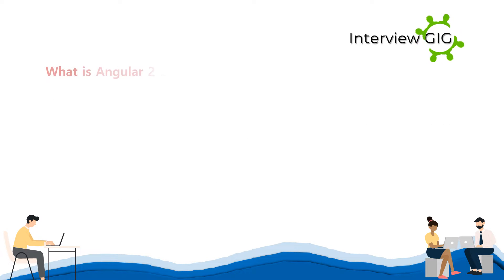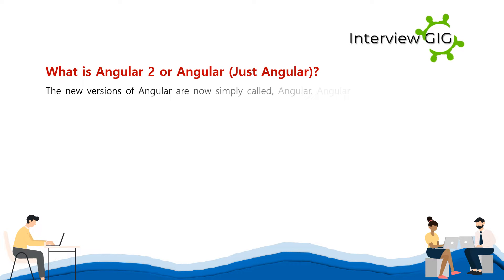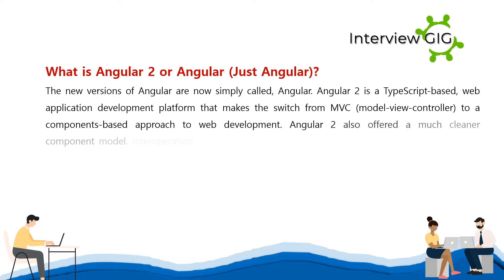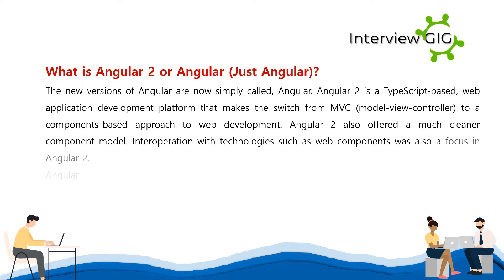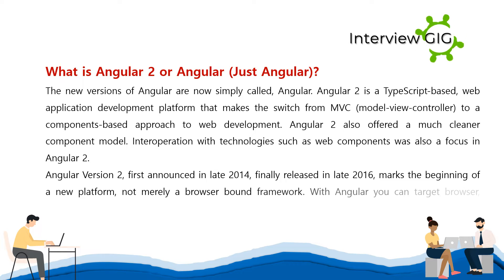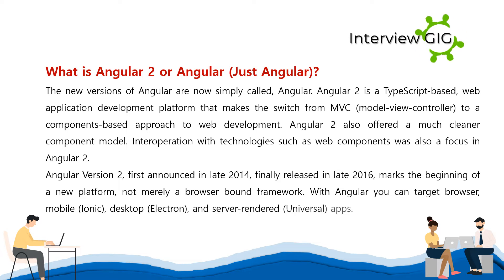What is Angular 2, or just Angular? The new versions of Angular are now simply called Angular. Angular 2 is a TypeScript-based web application development platform that makes a switch from MVC to a components-based approach to web development. Angular 2 also offered a much cleaner component model. Interoperation with technologies such as web components was also a focus. Angular version 2, first announced in late 2014 and finally released in late 2016, marks the beginning of a new platform, not merely a browser-bound framework.